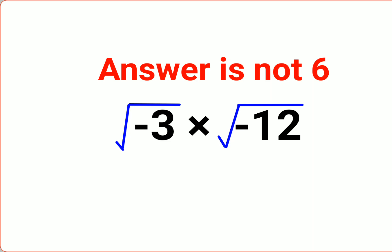Please understand. When you have something like this, √(-3) times √(-12).